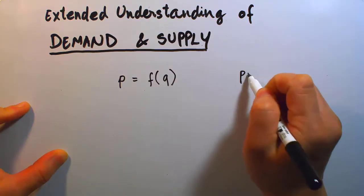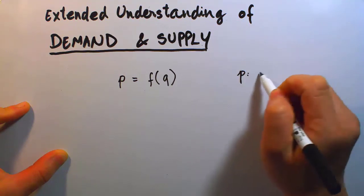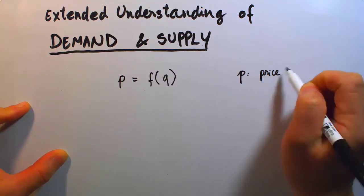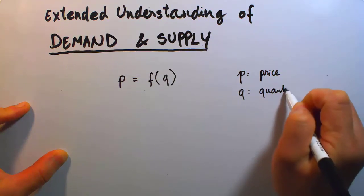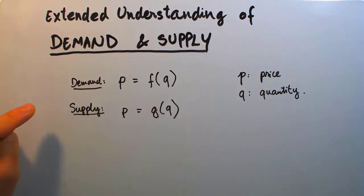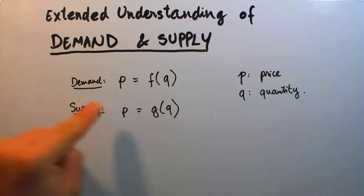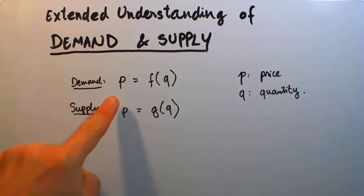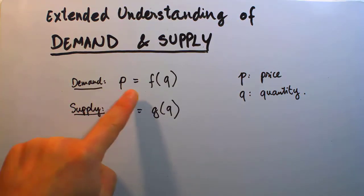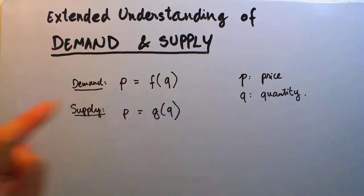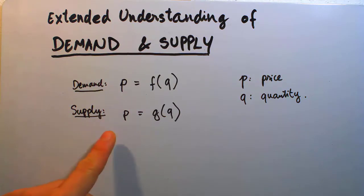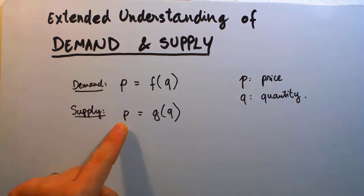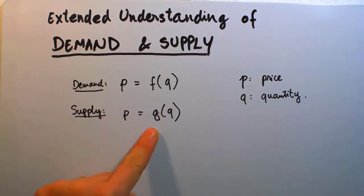To remind yourself, P, lowercase letter P, always represents price, and Q represents quantity of the commodity. Demand can always be expressed as price is a function F of Q. And supply, as a reminder, has traditionally been written as price equals a function G of Q.